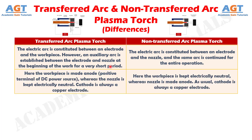Number two: in a transferred arc plasma torch, the workpiece is made the anode — the positive terminal of the DC power source — whereas the nozzle is kept electrically neutral. The cathode is always a copper electrode. But in a non-transferred arc plasma torch, the workpiece is kept electrically neutral, whereas the nozzle is made the anode. As usual, the cathode is always a copper electrode.